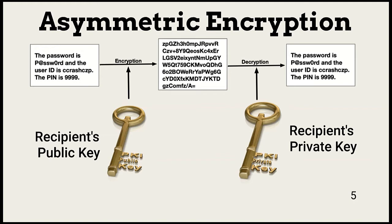Asymmetric encryption methodologies use key pairs. Each entity using asymmetric encryption is issued a public-private key pair. The most common way of doing this across an enterprise is with a public key infrastructure, or PKI. The sender of a file uses the public key of the recipient. Public keys are widely known or kept in a public key directory. The recipient then uses its private key to decrypt the information. No one other than the recipient of a key pair should know the private key.